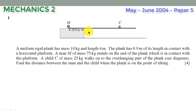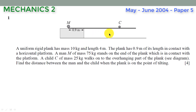The child is located on the overhanging region. We need to find the distance between the man and the child when the plank is on the point of tilting. Let's assume the plank is at the point of tilting when the child is at that position. The distance MC is what we are required to calculate.